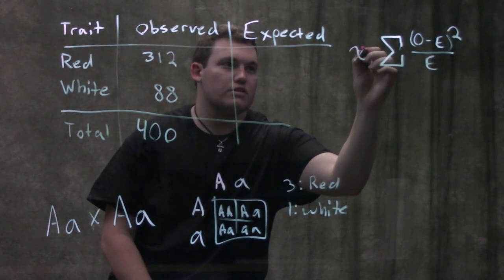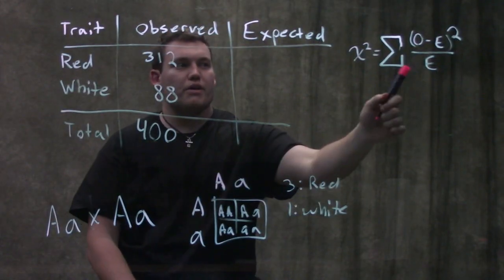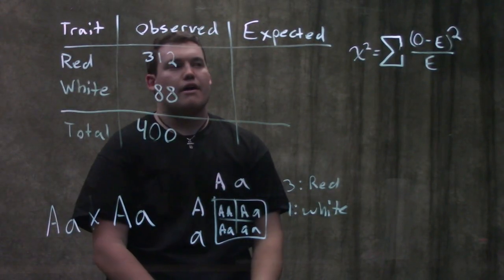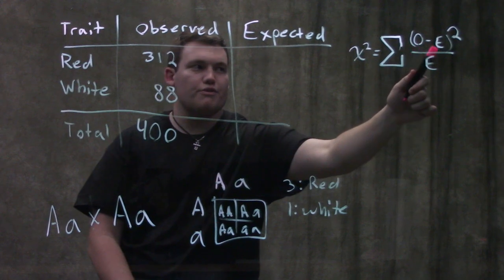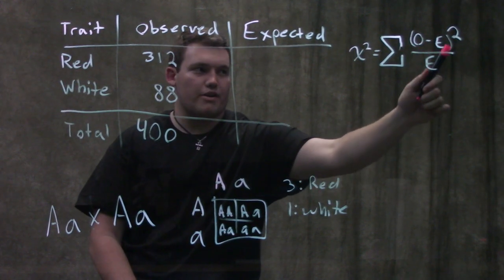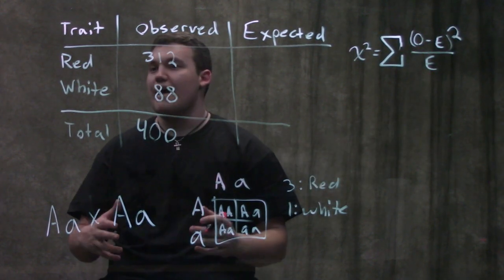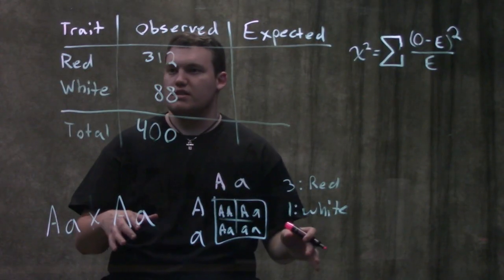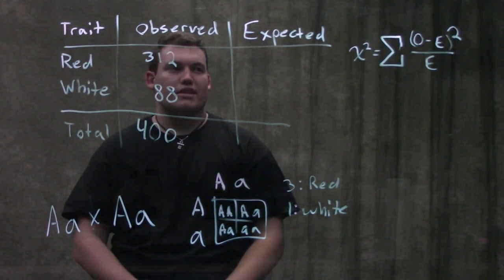So we're gonna plug this into this chi-squared formula and what you're gonna see is we're gonna have observed minus expected squared divided by the expected and then we're gonna add that up for all of our traits and then we're gonna do some other funky statistics stuff and I'll talk about that at the end.